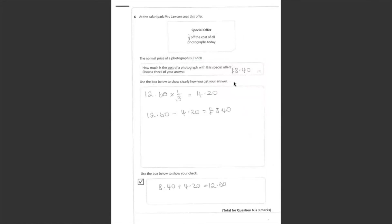Question 6. At the Safari Park, Mrs. Lawson sees this offer. Special offer again. A third off the cost of all photographs. We do love our photographs. The normal price is £12.60. How much is the cost of a photograph going to be? What is a third of £12.60? When you put this in your calculator, you do 1 divided by 3, which is going to be in decimal times by £12.60. That gives you £4.20. You take £4.20 from the normal price from £12.60. You're going to pay £8.40.